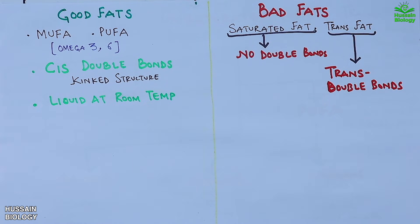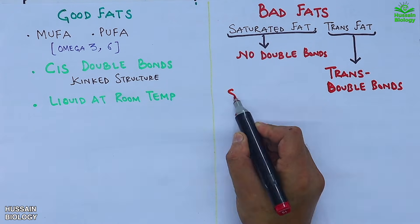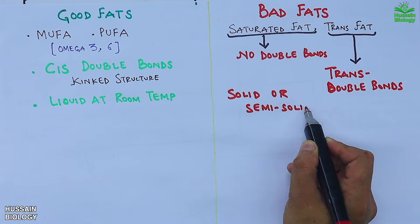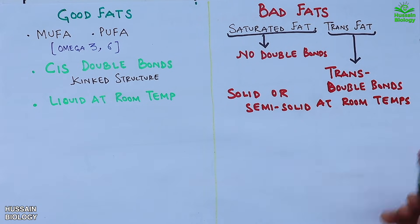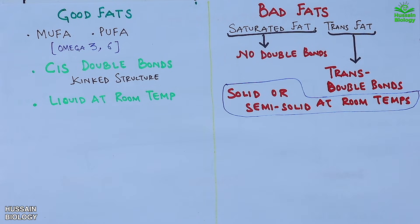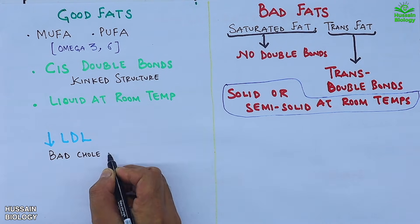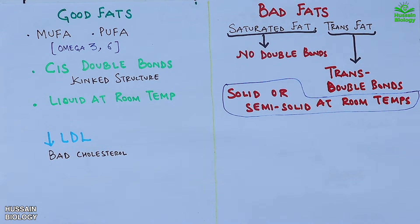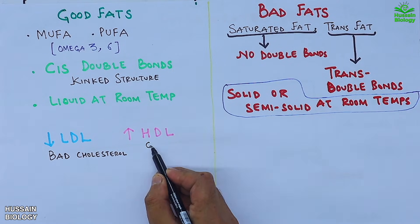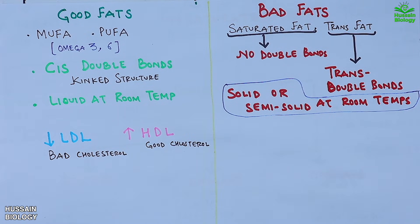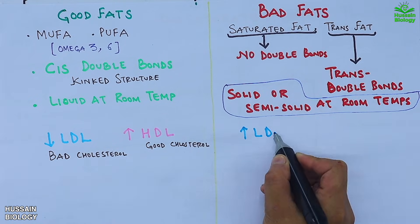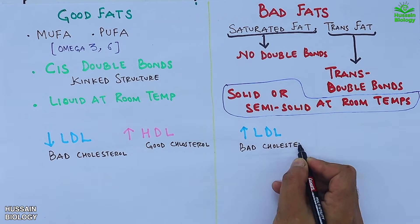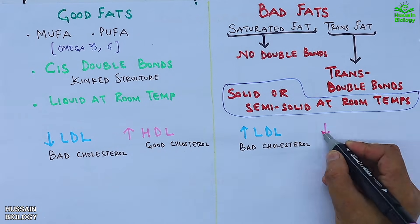In terms of physical properties, good fats are liquid at room temperature, whereas bad fats are solid or semi-solid at room temperature. For the lipoprotein effect: good fats decrease LDL — the bad cholesterol — and increase HDL — the good cholesterol. In the case of bad fats, it's vice versa — they increase LDL and decrease HDL.